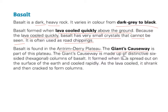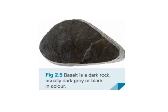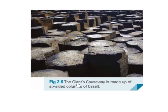The Giant's Causeway is made up of distinctive six-sided hexagonal columns of basalt. Basalt is formed when lava spread out on the surface of the earth and cooled rapidly. As the lava cooled, it shrank and then cracked to form columns. Basalt is a dark rock, usually dark grey or black in colour. The Giant's Causeway is made up of six-sided columns of basalt.